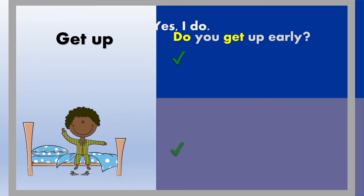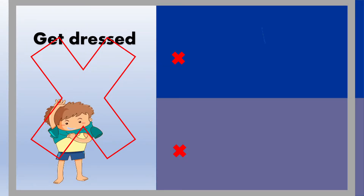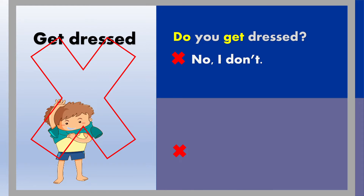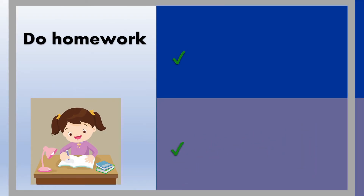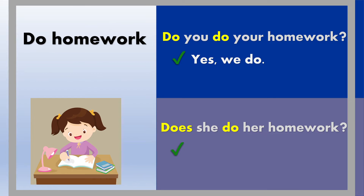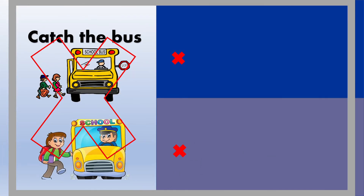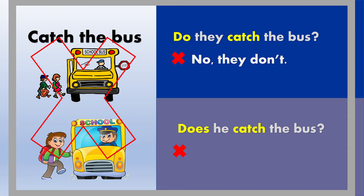Do you get up early? Yes, I do. Does he get up early? Yes, he does. Do you get dressed? No, I don't. Does he get dressed? No, he doesn't. Do you do your homework? Yes, we do. Does she do her homework? Yes, she does. Do they catch the bus? No, they don't. Does he catch the bus? No, he doesn't.